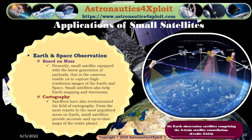Presently, small satellites equipped with the latest generation of sensors — that is, cameras — enable us to capture high-resolution images of the Earth and space. Small satellites also help with Earth mapping and astronomy. Satellites have revolutionized the field of cartography. From the most remote to the most populated areas on Earth, small satellites provide accurate and up-to-date maps of the entire planet. This picture shows six Earth observation satellites comprising the A-Train satellite constellation.